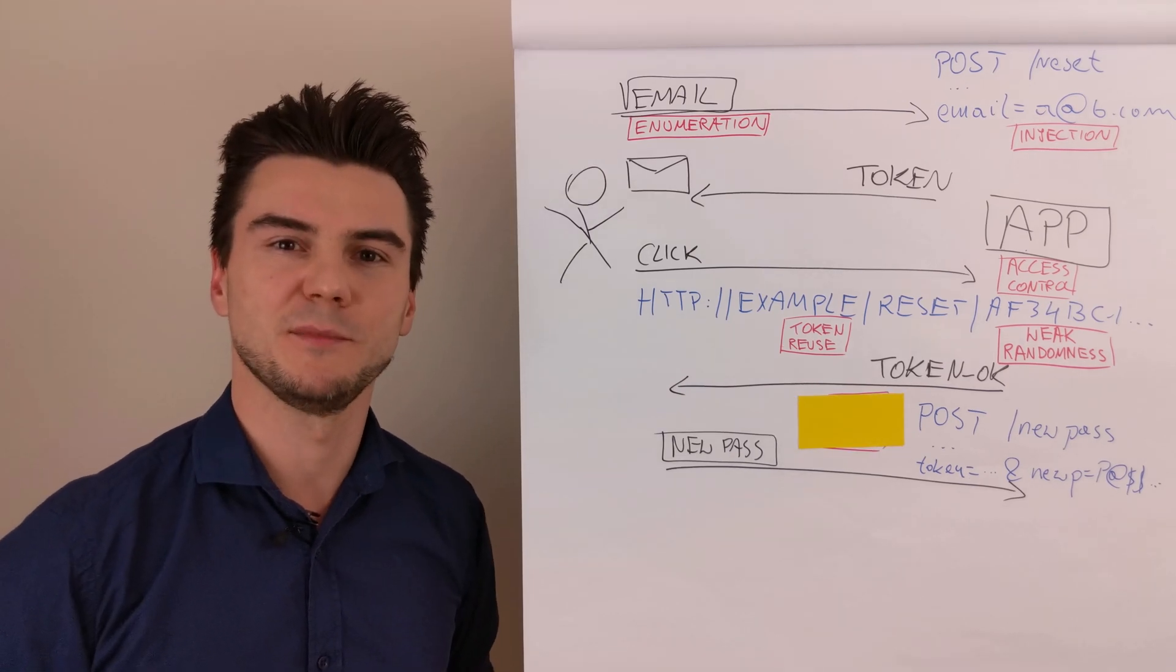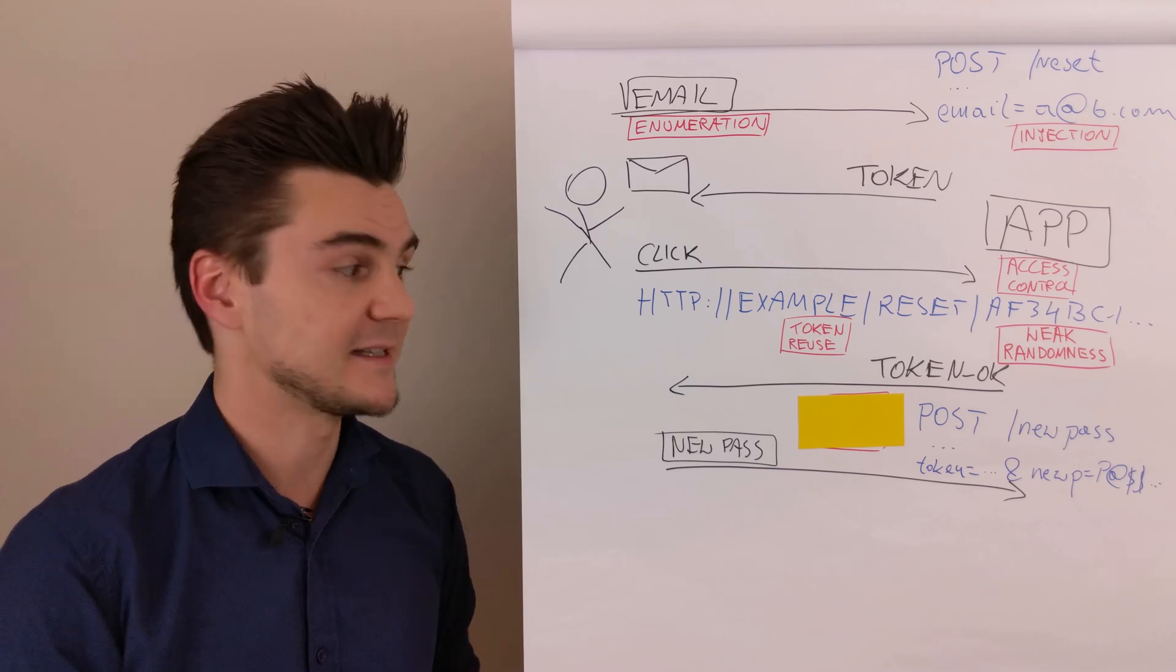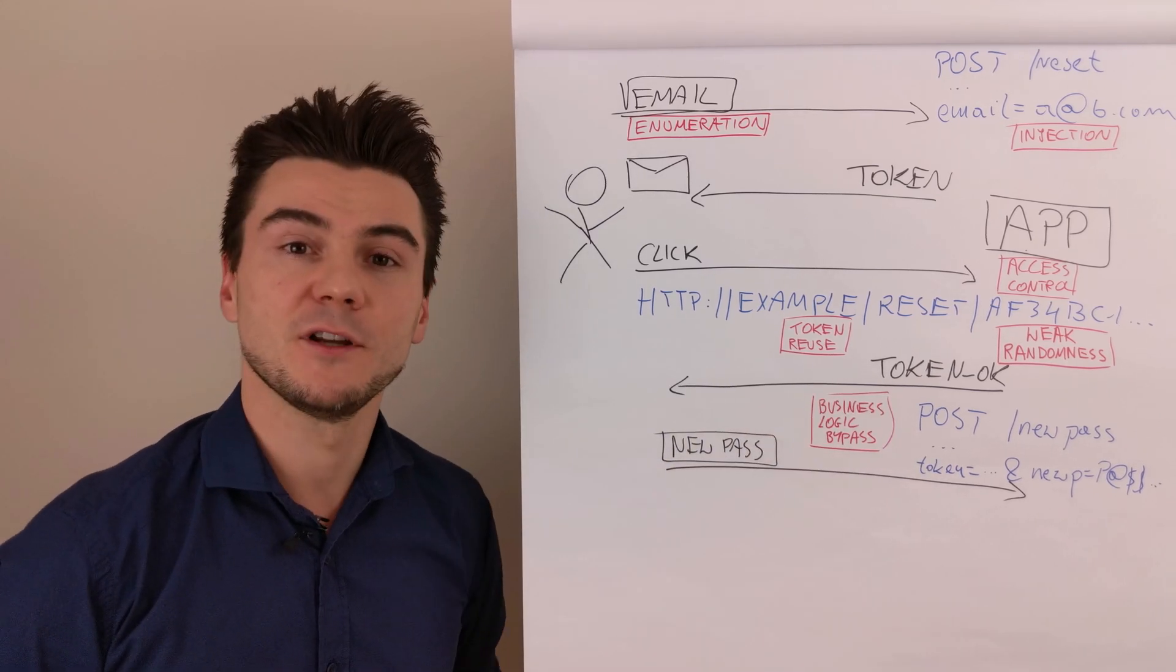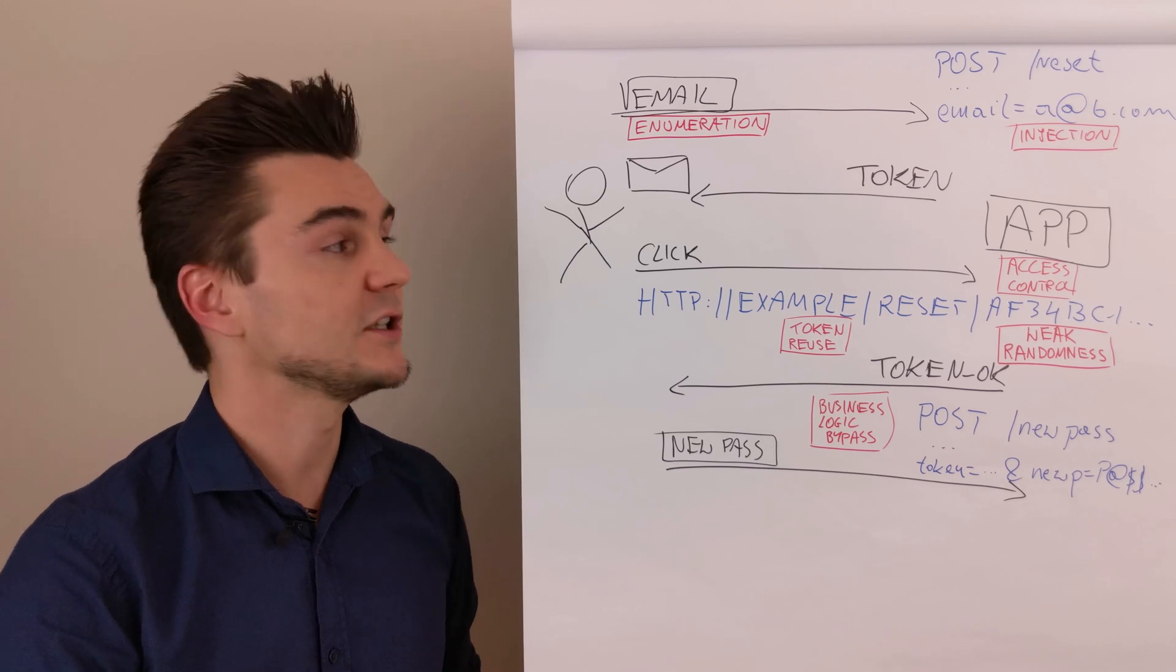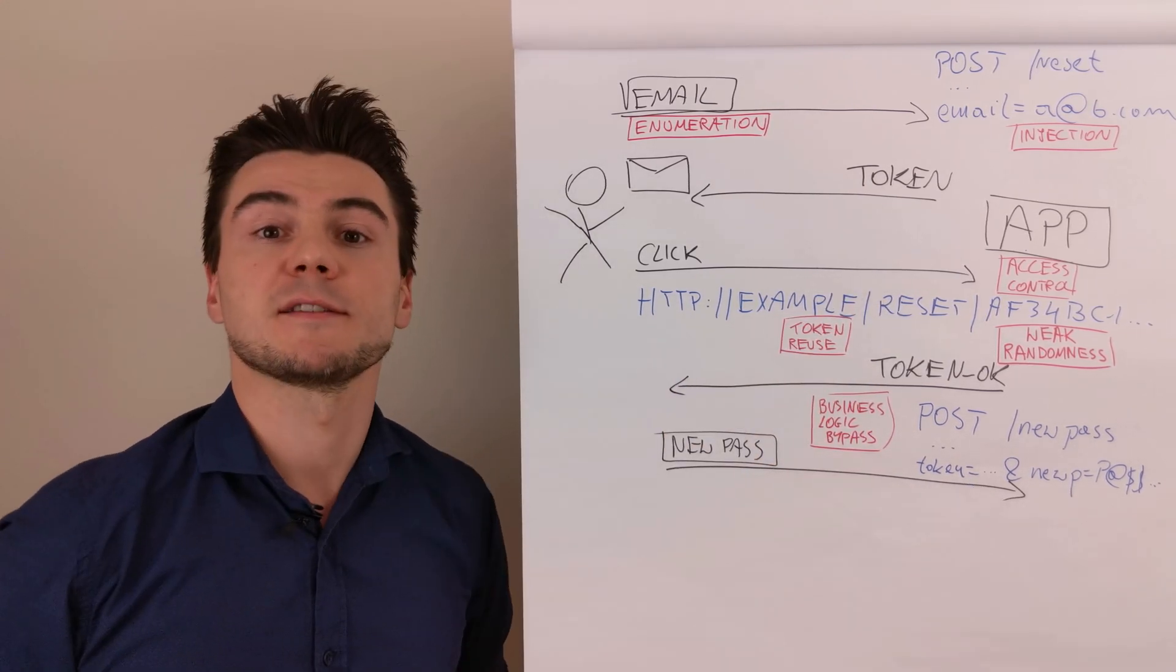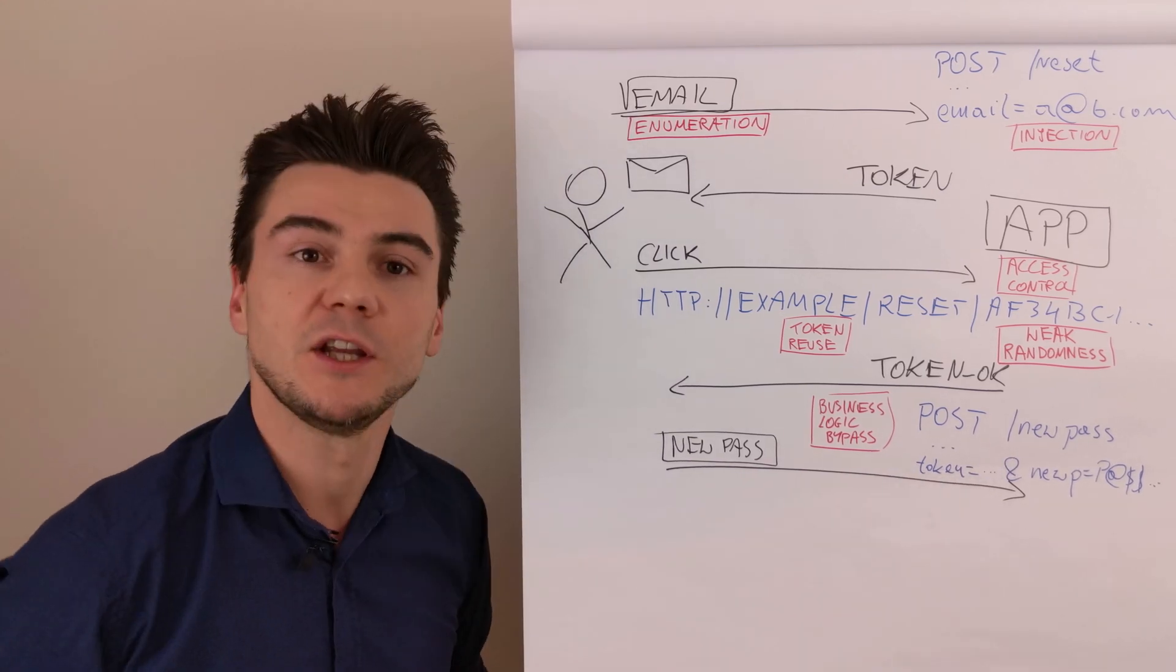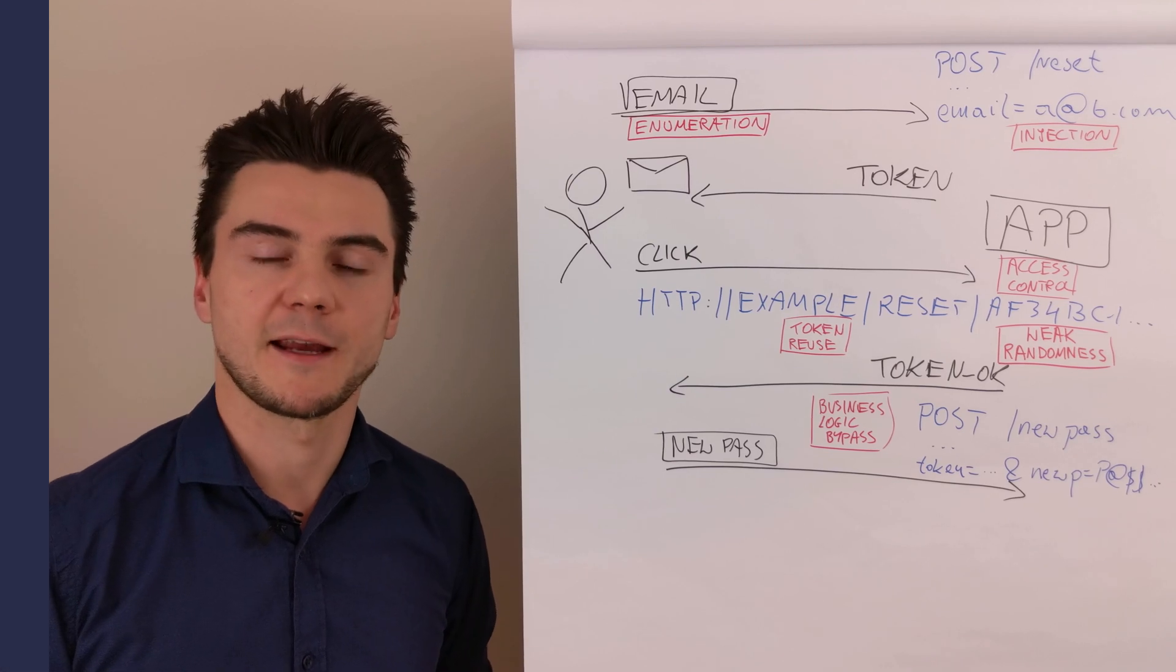And I'll finish the brainstorm with a vulnerability that gives a lot of satisfaction, at least for me. A business logic bypass. Very often the token is verified only in the second step when the user clicks the link, but not in the third step. So just executing the request to change the new password without any token here will allow to take over an account.